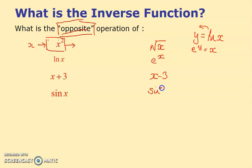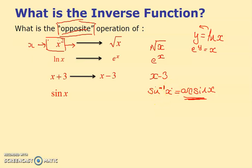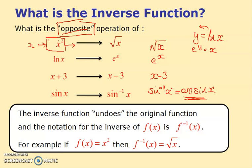The inverse of sin(x) is written as sin⁻¹(x), and this can also be written as arcsin. Now, the notation f⁻¹ looks like a power but it's not — it represents the inverse function. So f⁻¹ is the way we write the inverse function for f(x).